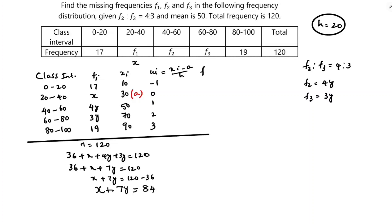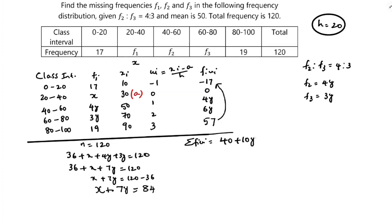Now computing fi*ui: 17 times minus 1 is minus 17; x times 0 is 0; 4y times 1 is 4y; 3y times 2 is 6y; 19 times 3 is 57. So sigma fi*ui equals 57 minus 17 plus 10y, which gives 40 plus 10y.